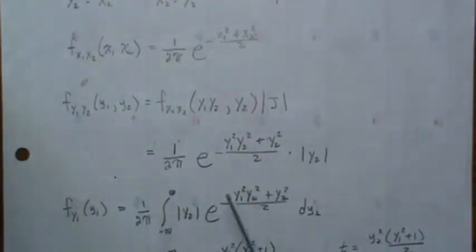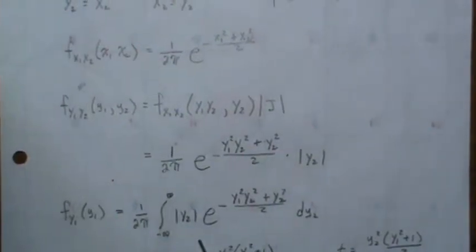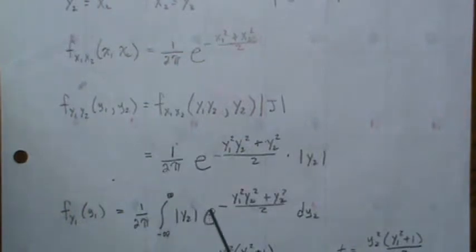Y2 is X2, but X2 is a standard normal, so we're going to integrate over the whole real number line of this density. The 1 over 2π comes out—it's not in the Y2 world.